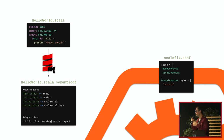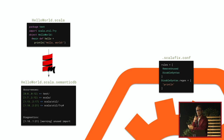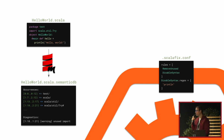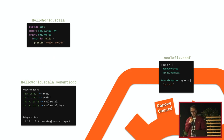The SemanticDB file captures everything from the source files but typed. For those who know Tasty — the AST representation in Scala 3 — it's a stripped-down version available for both Scala 2 and Scala 3. It's also what Metals uses for code navigation. So the first step is generating SemanticDB information. Then we initialize ScalaFix with the two rules: RemoveUnused and DisabledSyntax.